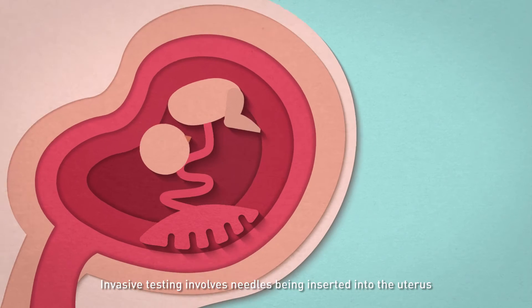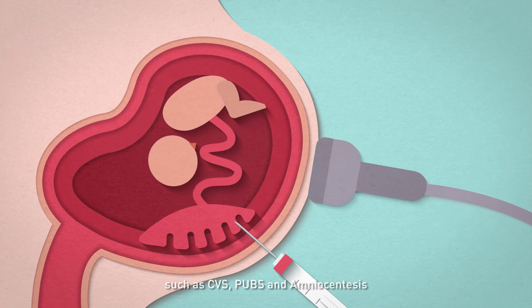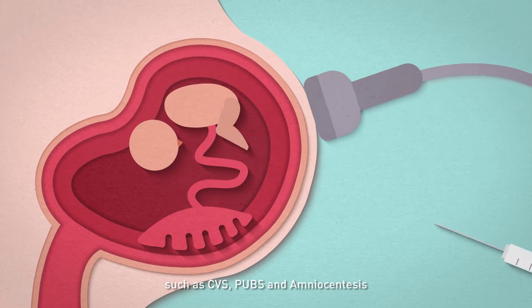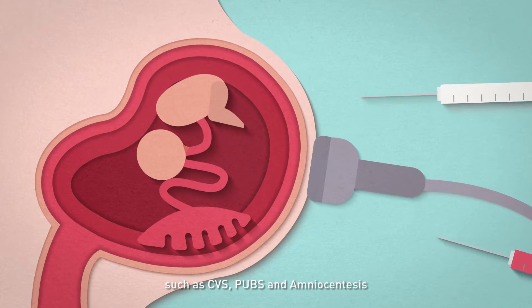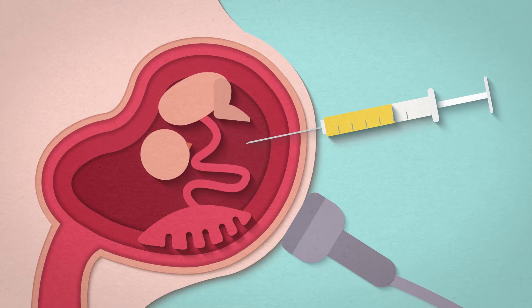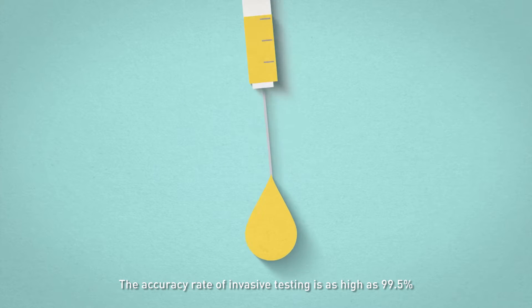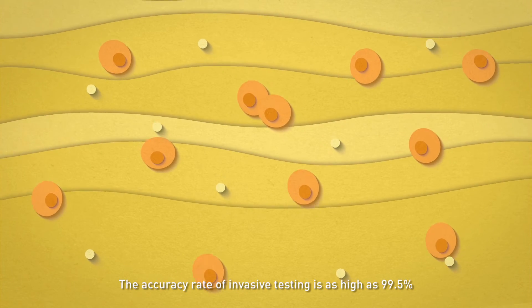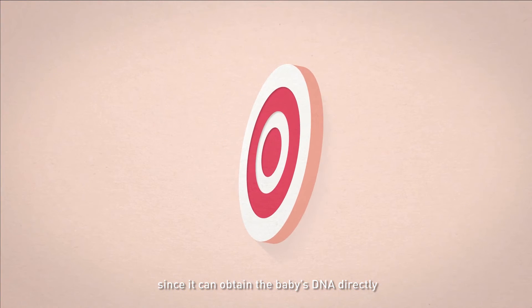Invasive testing involves needles being inserted into the uterus, such as CVS, PUBS, and amniocentesis. The accuracy rate of invasive testing is as high as 99.5% since it can obtain the baby's DNA directly.